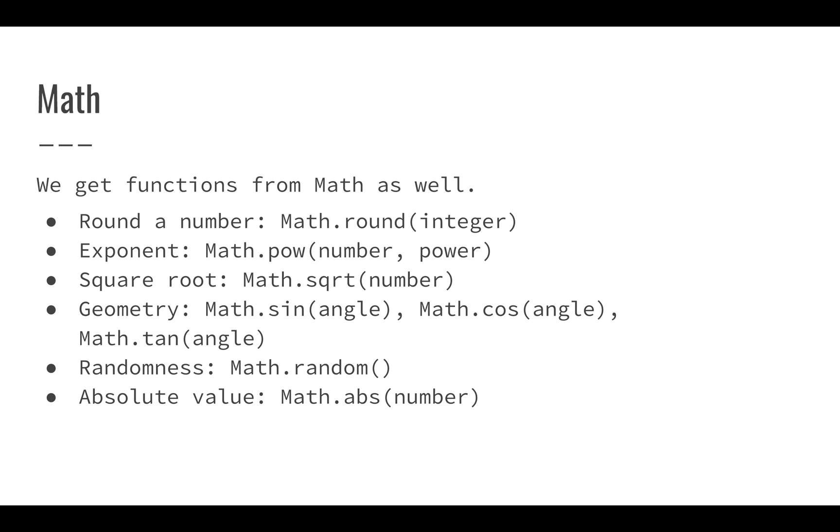We have geometry functions if we want to start working with geometry - sine, cosine, and tangent. We can also get a random value, which is interesting. Math.random will return a number between zero and one. We can use that random number between zero and one. It's going to be some decimal number like 0.76419276, but we can use that to convert to any normal integer.